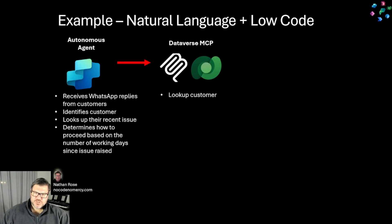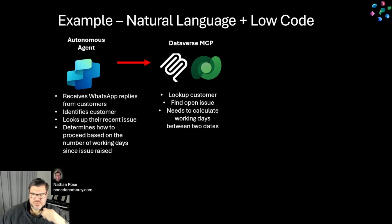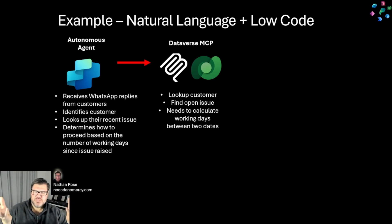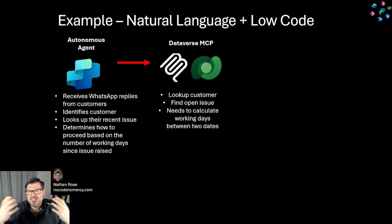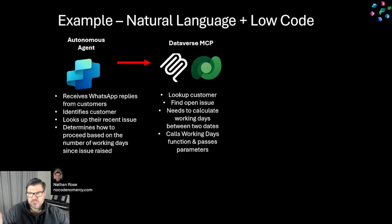Dataverse MCP makes it really easy to look up the customer based on the WhatsApp number, and then find the related open issues for that customer. But now we need to calculate the working days between our two dates. We could build this in the agent, but this comes up in almost every project, so it would be really great to have something reusable that we can call across the Power Platform as needed. We just need MCP server to pass the parameters — the customer, the issue, and the current date and time — into the function, and then it can do the rest.